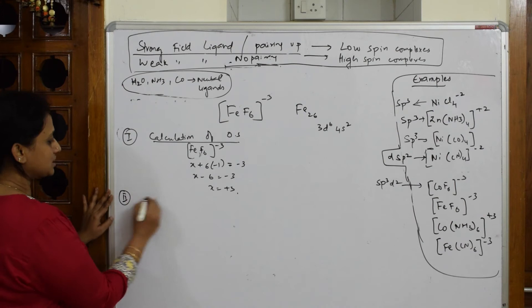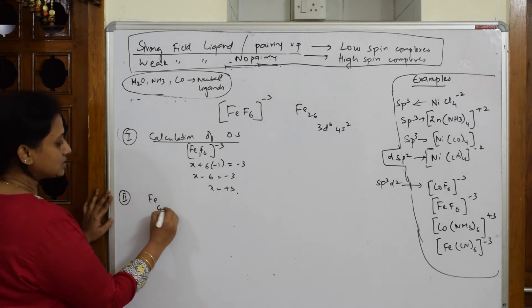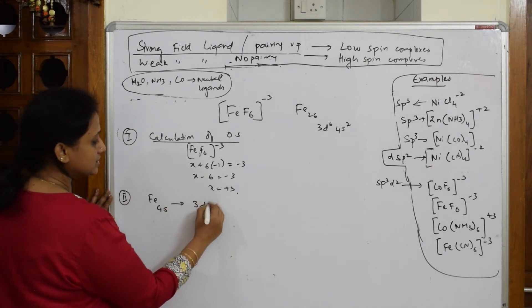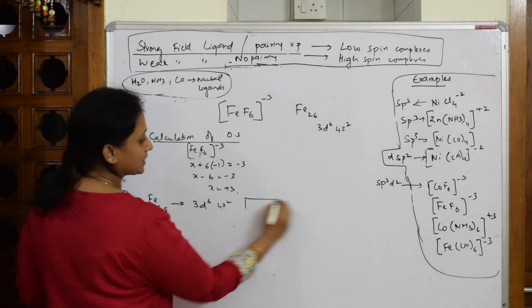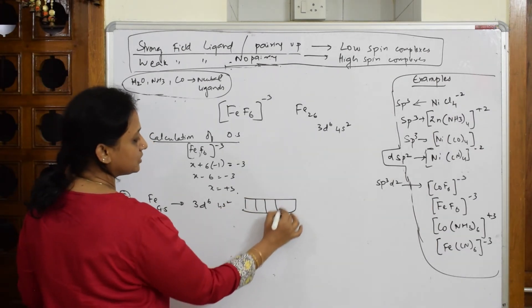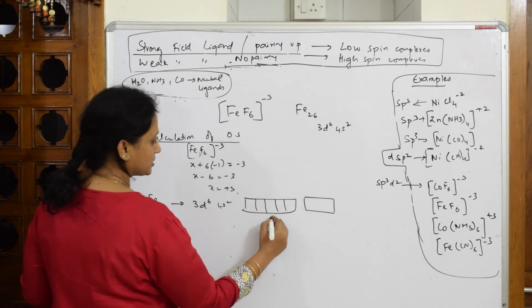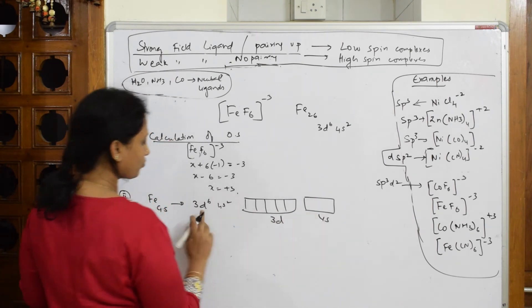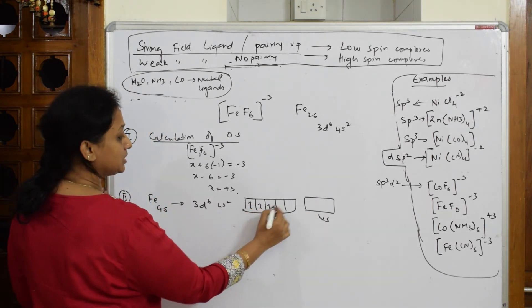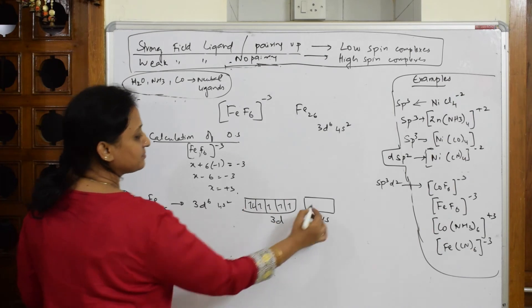Let's come back and write the ground state. Fe with ground state configuration is 3d6 4s2. Now start filling. 3d: 1, 2, 3, 5. 4s2. Six: 1, 2, 3, 4, 5, 6. 4s2.